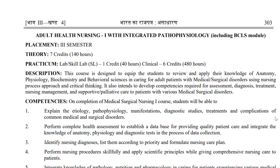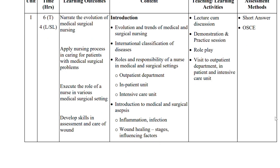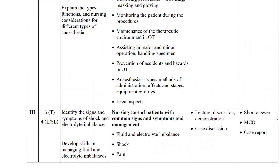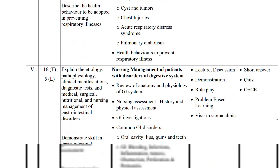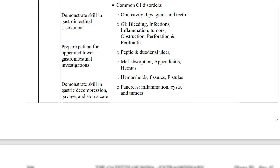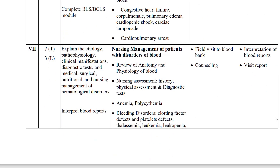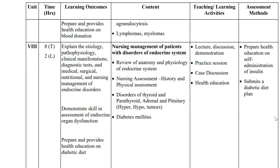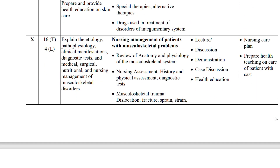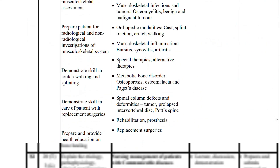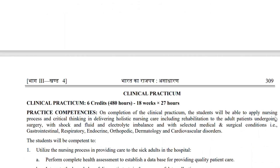Adult Health Nursing One with Integrated Pathophysiology is also included in the third semester. The syllabus covers introduction, intraoperative care, nursing care of patients with common signs and symptoms and its management, nursing management of patients with respiratory problems, digestive system disorders, cardiovascular problems, blood disorders, endocrine system disorders, integumentary system disorders, musculoskeletal problems, and communicable diseases.